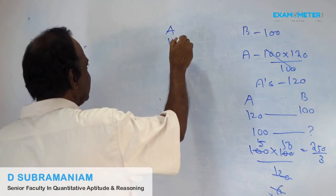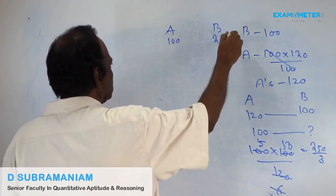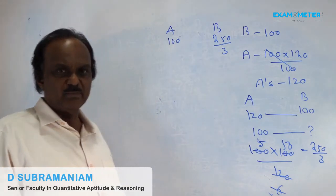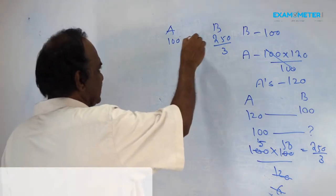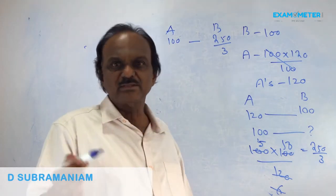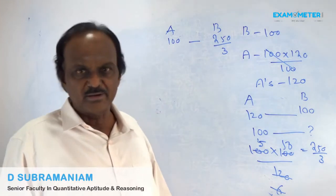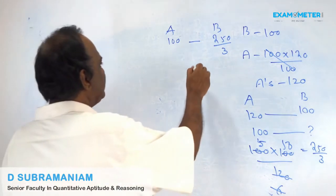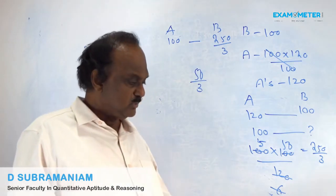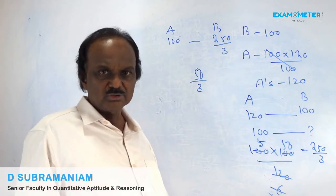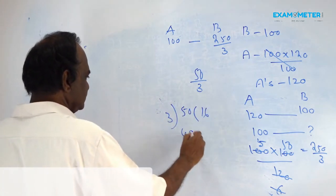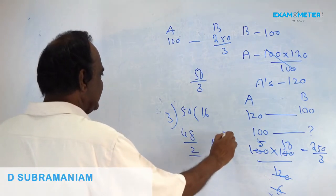If A's salary is 100, B's salary is 250/3 less. So subtract: cross multiply and subtract. 3 × 100 = 300. 300 minus 250 = 50/3. We got the answer as an improper fraction, but multiple choices are given as mixed numbers, so convert: that is 16⅔%.